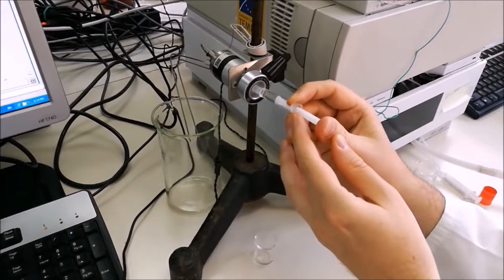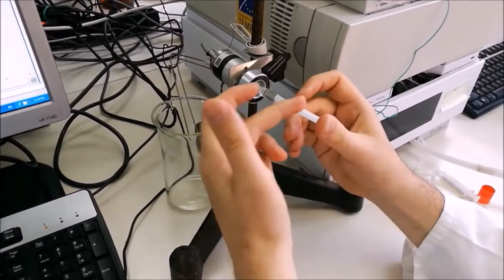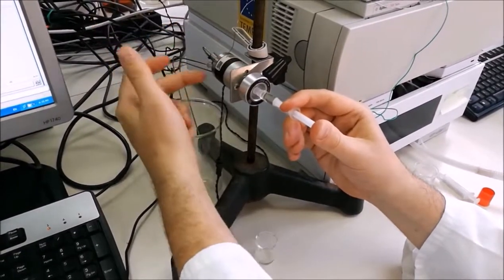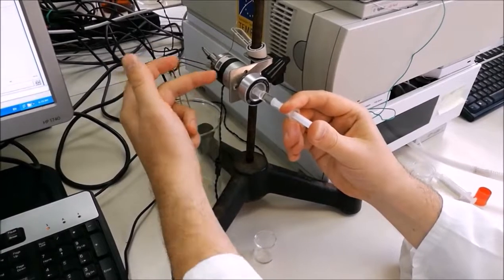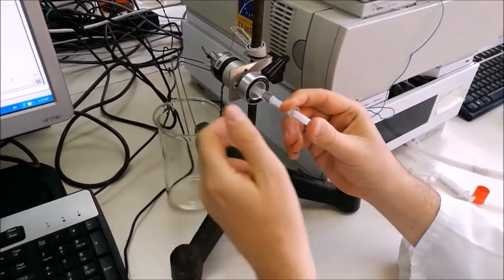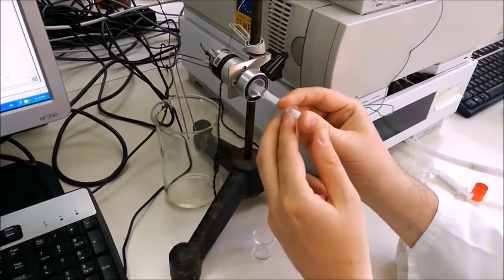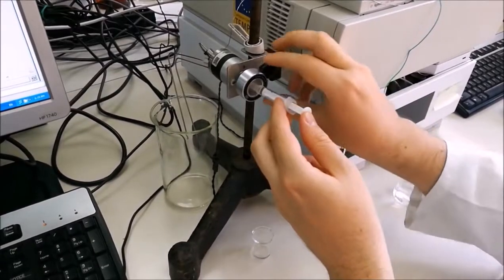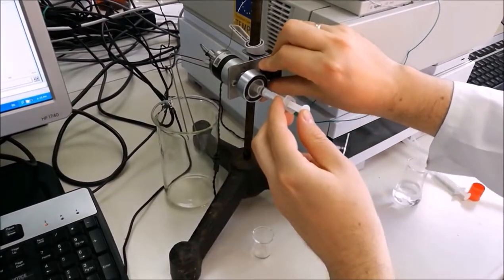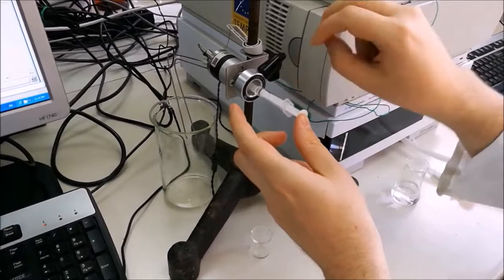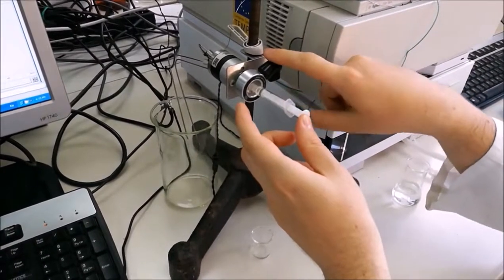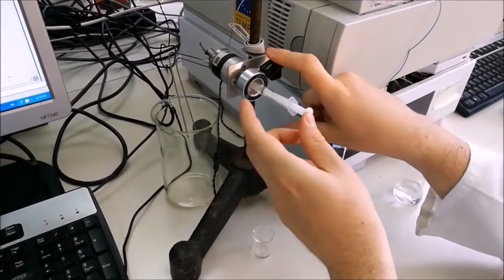We inject the sample into the loop, so the sample will wash and fill the loop. The extra will just go into the waste. And when we are sure that the loop is completely filled, we don't pull out the syringe, and we switch the valve to inject position.